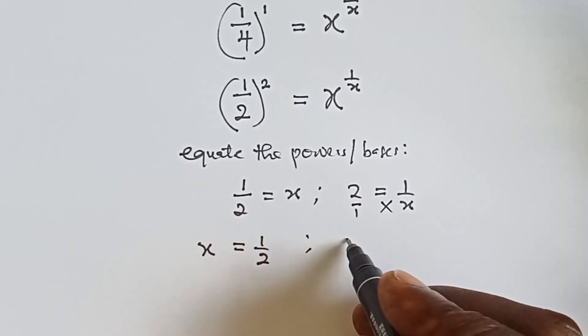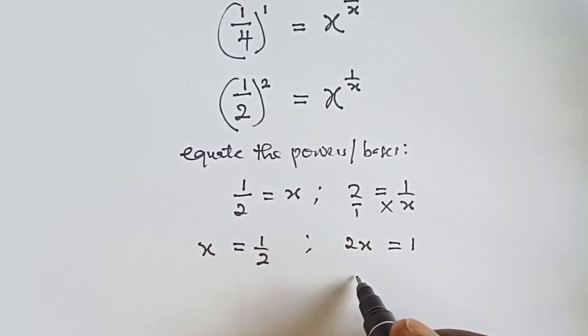And from here let's find x. We cross multiply, so we have 2x equals to 1, and from there we see x equals to 1 divided by 2.